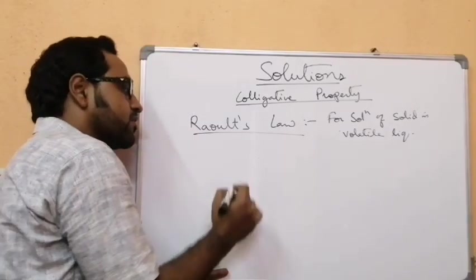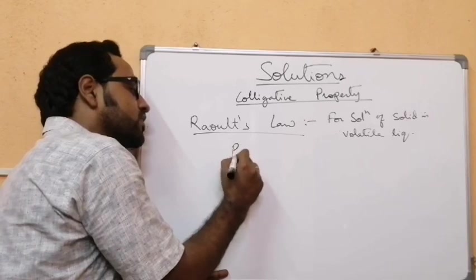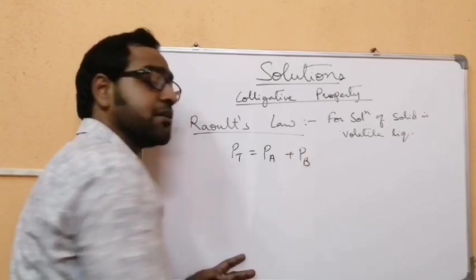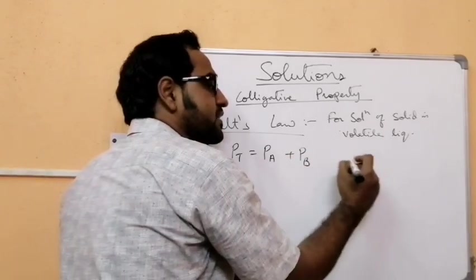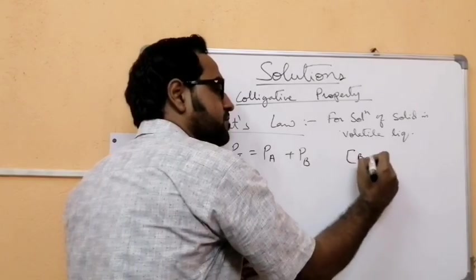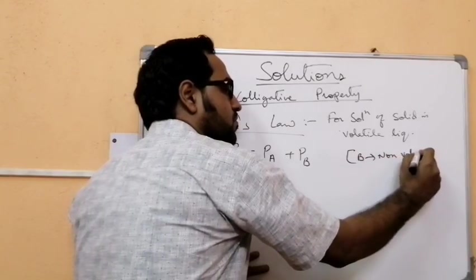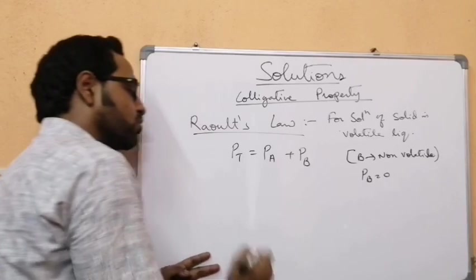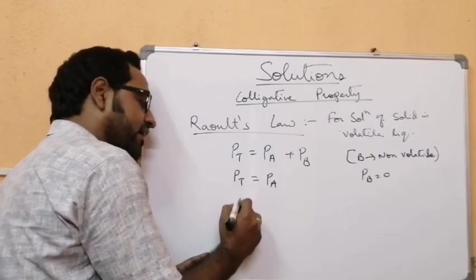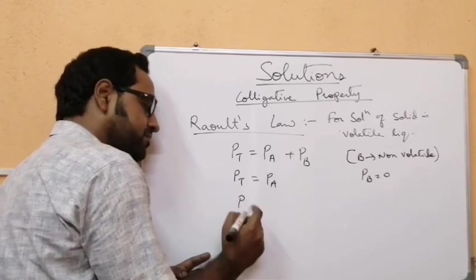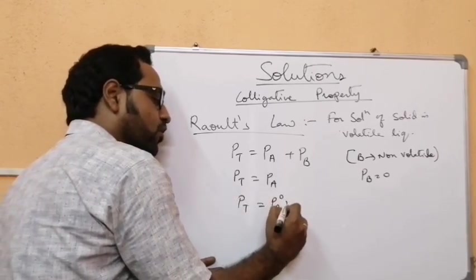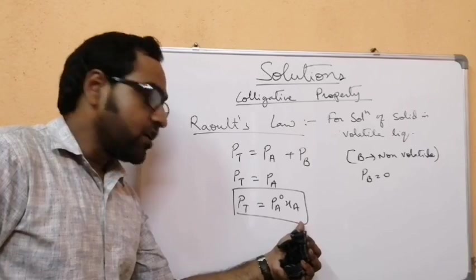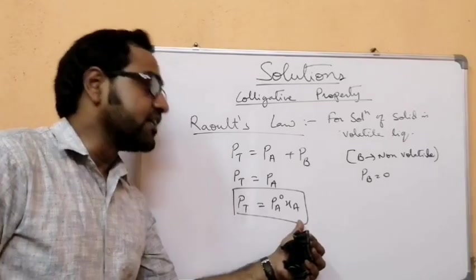We have learned that the total pressure P_total is equal to the partial pressure of A plus partial pressure of B. Now B is the solid and B is non-volatile, so P_B is equal to zero. Therefore P_total equals P_A. From Raoult's law, the total pressure of the solution is directly proportional to the mole fraction of the solvent in the solution.